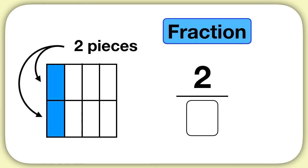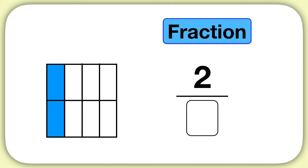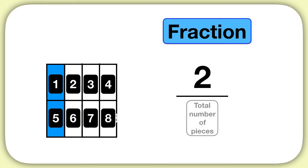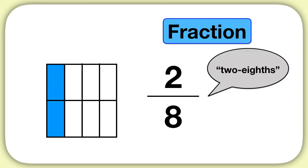What number should I put below the line? Well, the number below the line is the total number of pieces in my shape. Here it's 1, 2, 3, 4, 5, 6, 7, 8 total pieces, so we write the number 8 below the line. Now how can I read this fraction? I read this fraction as 2 eighths.